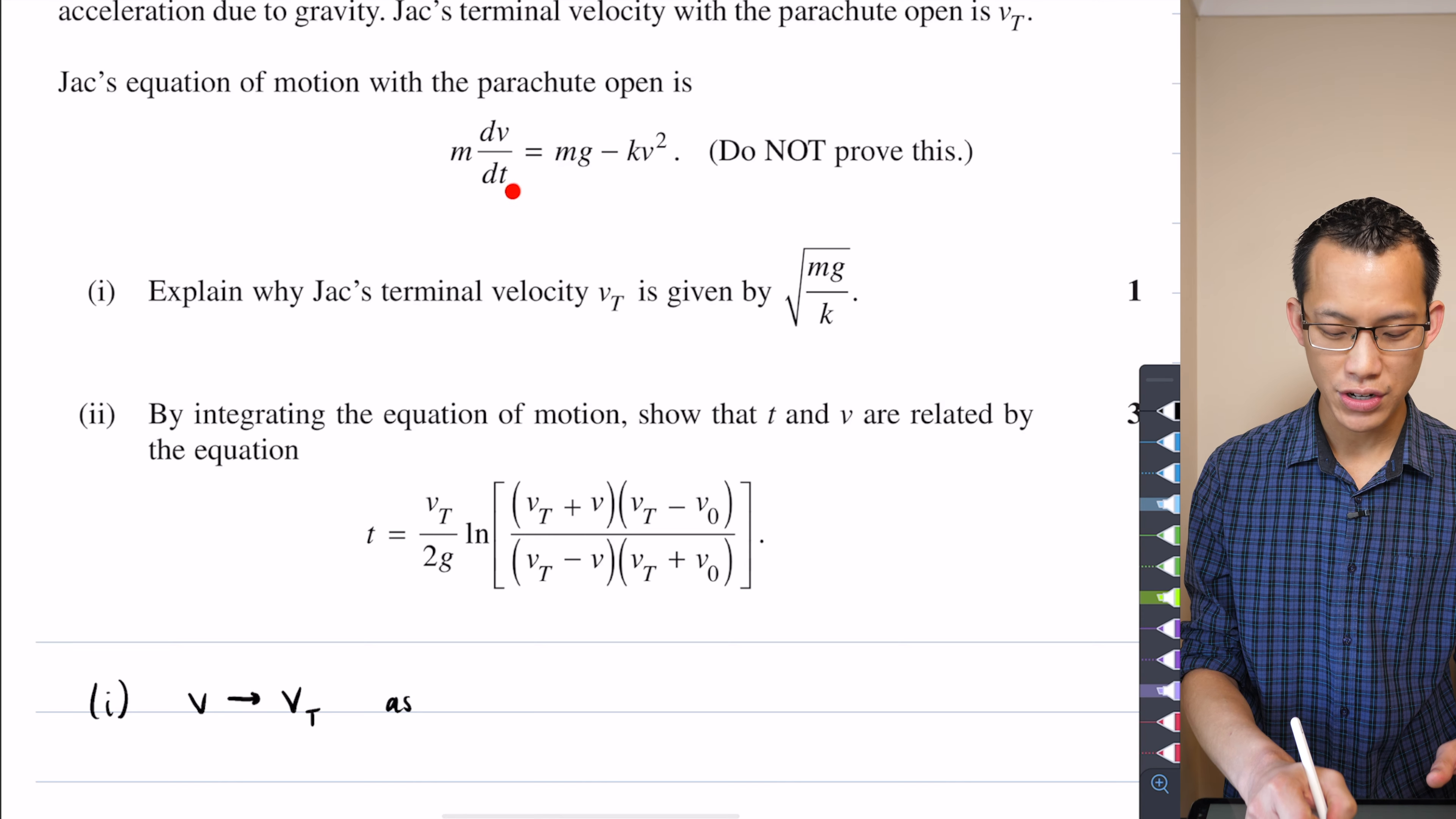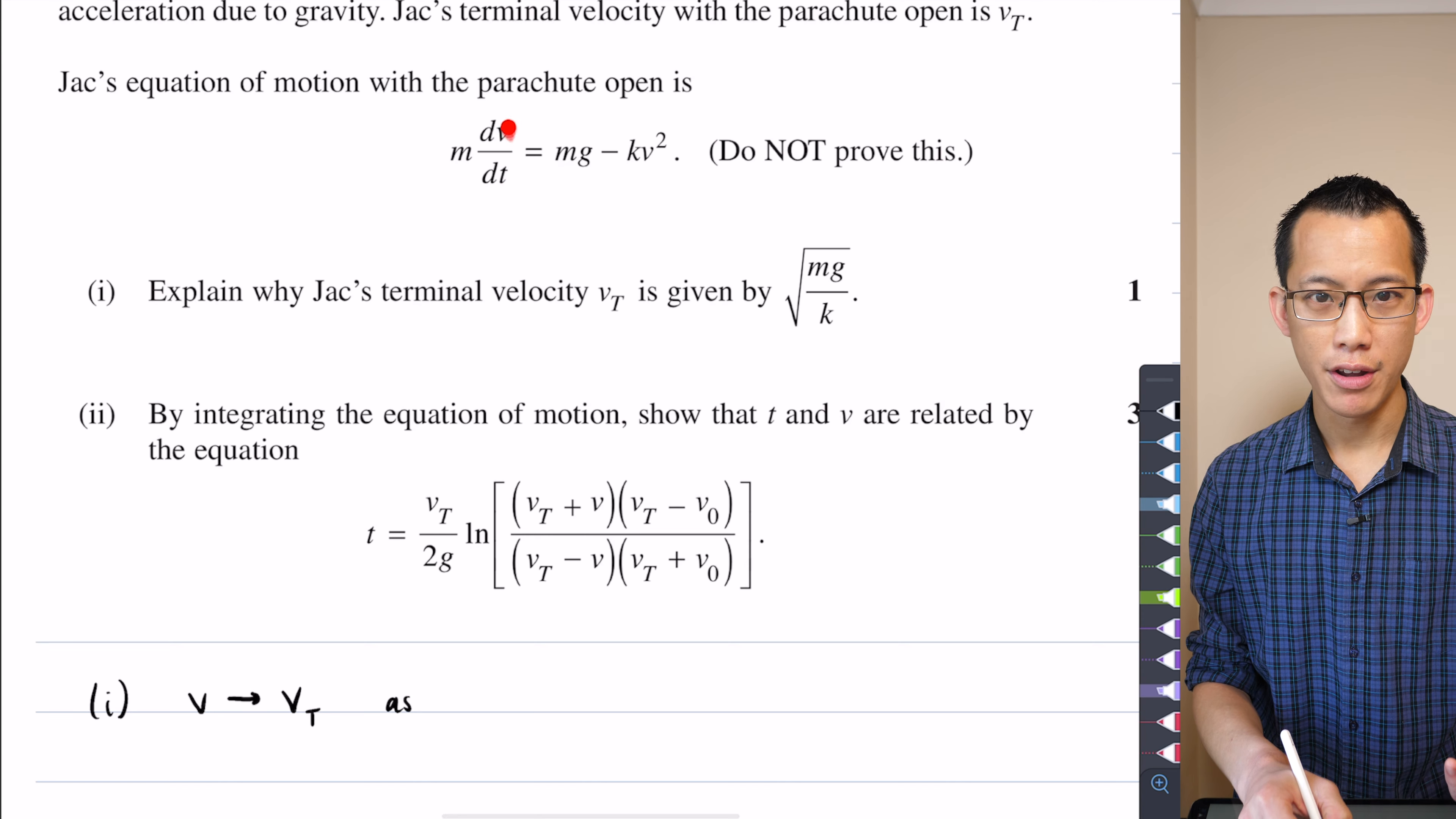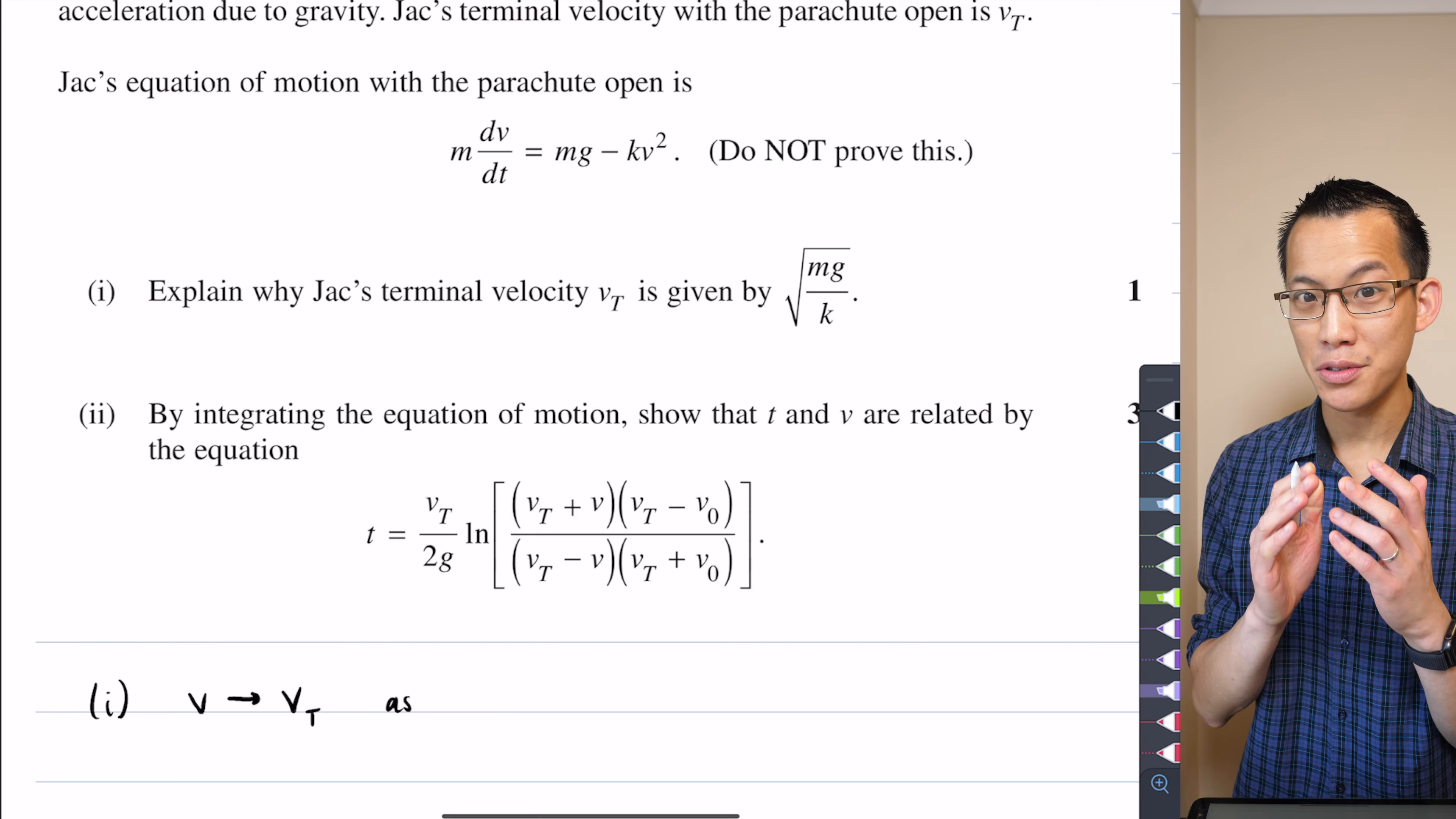And I would say based on the equation of motion, when your acceleration here, dV on dt, when that's going towards zero, like the whole idea of terminal velocity is once you get there, I mean, you can't physically get there in a theoretical situation because you're always approaching, but never quite getting there.